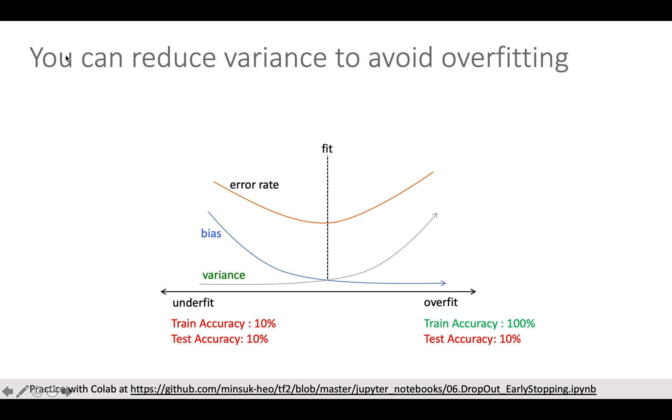Mathematically, overfitting is happening when variance is too high. And when variance is too low but bias is too high, we call it underfitting.